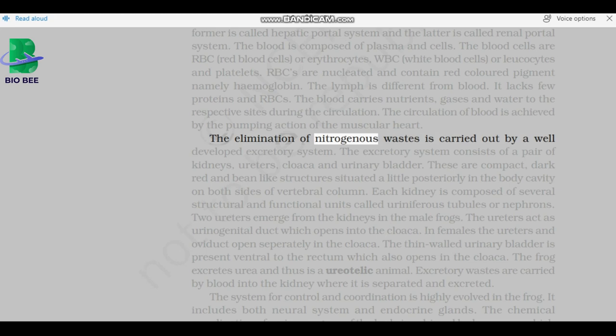The elimination of nitrogenous wastes is carried out by a well-developed excretory system. The excretory system consists of a pair of kidneys, ureters, cloaca and urinary bladder. Kidneys are compact, dark red and bean-like structures situated a little posteriorly in the body cavity on both sides of vertebral column. Each kidney is composed of several structural and functional units called uriniferous tubules or nephrons. Two ureters emerge from the kidneys. In male frogs, the ureters act as urinogenital duct which opens into the cloaca. In females the ureters and oviduct open separately in the cloaca. The thin-walled urinary bladder is present ventral to the rectum which also opens in the cloaca. The frog excretes urea and thus is a ureotelic animal. Excretory wastes are carried by blood into the kidney where it is separated and excreted.